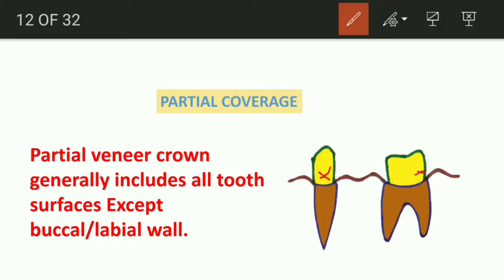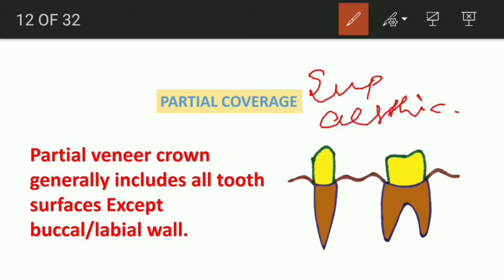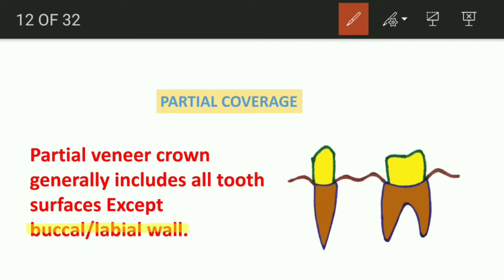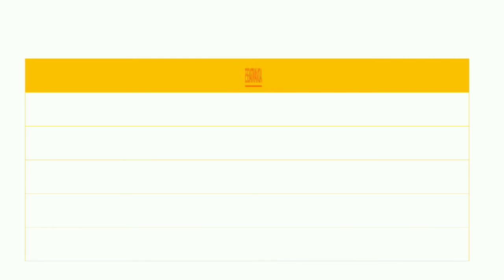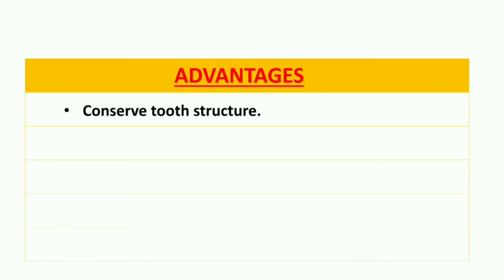The second type is partial coverage retainers. These restorations do not involve all the surfaces for preparation — they require less tooth preparation and are aesthetically more superior. If we leave the facial or buccal surface unprepared and place the crown or retainer only on remaining surfaces, these are called partial coverage retainers. They offer superior aesthetics because the facial and labial walls of anterior and posterior teeth are left unprepared, retaining a natural tooth surface.